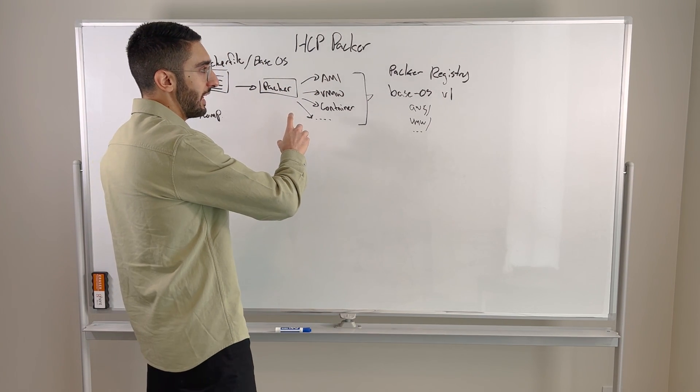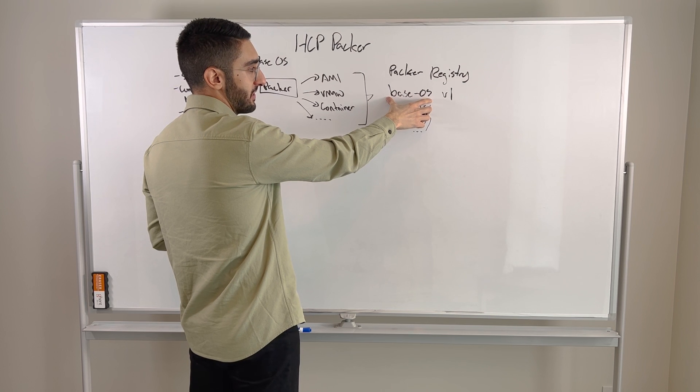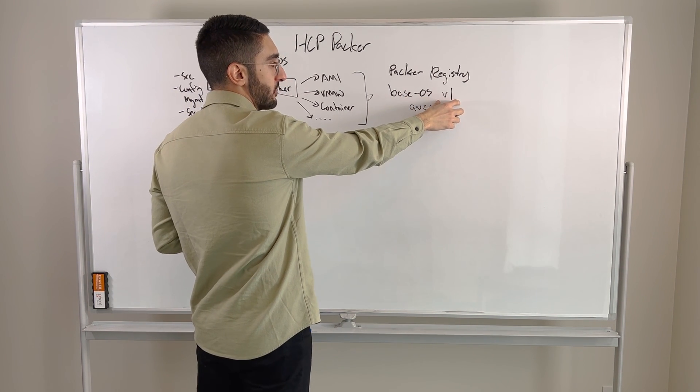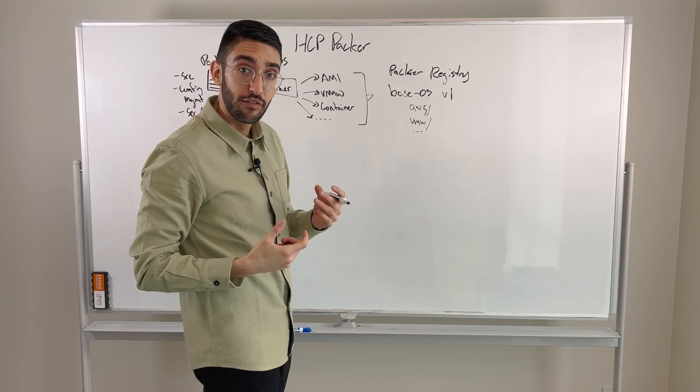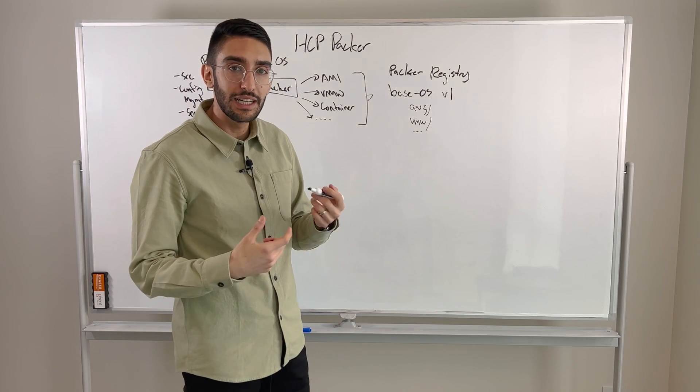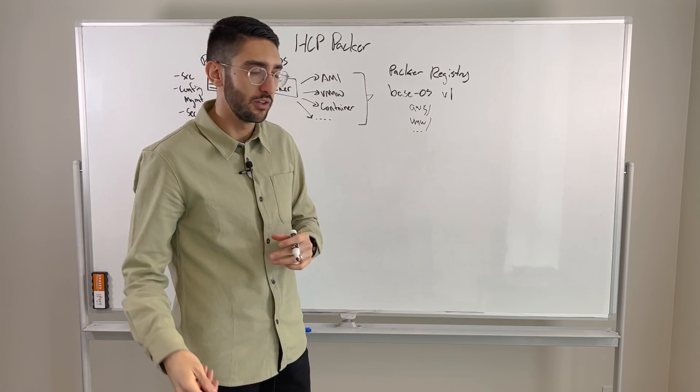So for each of these images, they'll get uploaded under a single image name. In this case, we'll call it base OS. That thing will have a version number. So in this case, we've published only the first version of this image. And then there might be a version of that artifact unique to each environment. Our Amazon image will look slightly different than Azure or slightly different than Google.